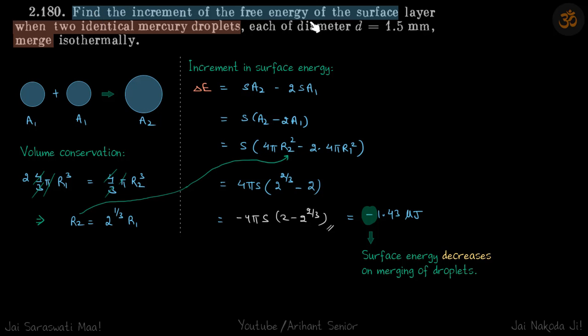Find the increment of free energy of the surface when two identical mercury droplets are merged isothermally. Isothermally means there is no change in internal energy of the liquid.